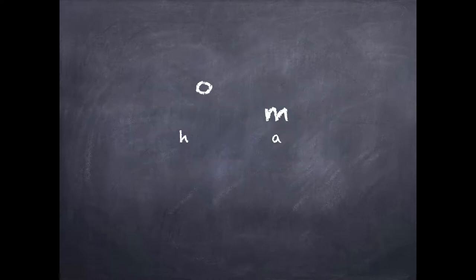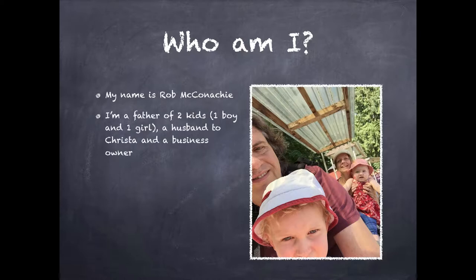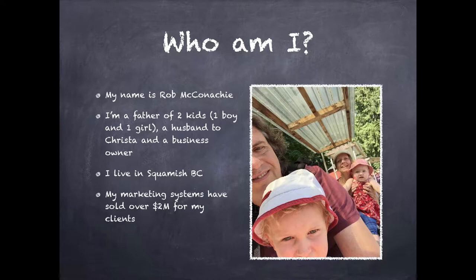A little bit about who I am. My name is Rob McConnachie. I'm a father of two kids — one boy and one girl — and I'm the husband to Krista, a business owner, and I live in Squamish, B.C. My marketing systems have sold over two million dollars for my clients, and I've been helping clients online for a little over three years.